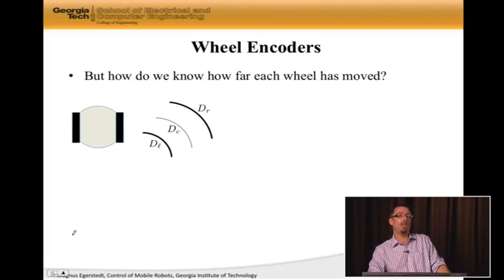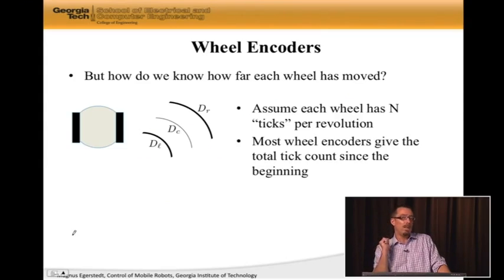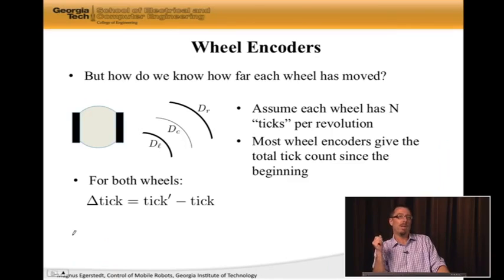So, but how do we know dr and dl though? This is what we need to know in order to find out where the robot is. Well, assume that each wheel has N ticks per revolution. So two pi degrees is N ticks. So most wheel encoders actually give the total tick count since the beginning. So what you measure is how many ticks since you started the system up.